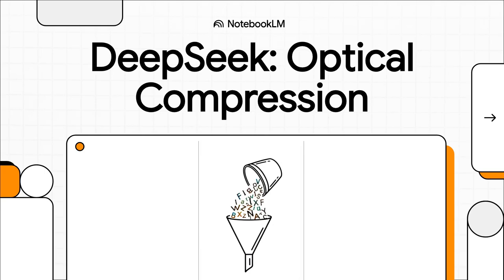All right, let's dive into something that at first sounds completely backward, but it might just change how we think about AI and data. We're talking about DeepSeek OCR, a project that asks a pretty wild question. Can you take a thousand words of text, turn them into a picture, and somehow make the data smaller?